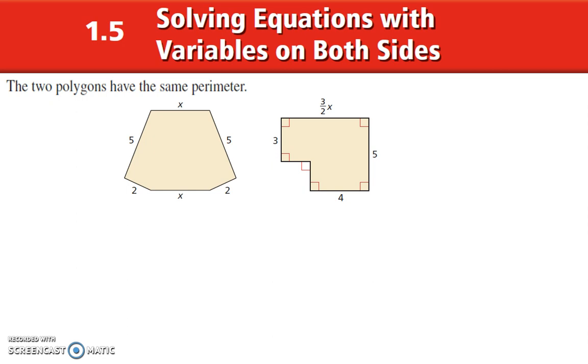Let's start out with a little bit of geometry. Here we've got a couple of shapes, and we are told that these have the same perimeter. Remember, perimeter is where we add up all of the sides. So we can say the perimeter of this one is equal to the perimeter of this one. Now we add up all the sides, that means we'll do 5 plus x plus 5 plus 2 plus x plus 2.